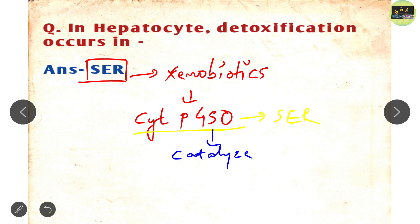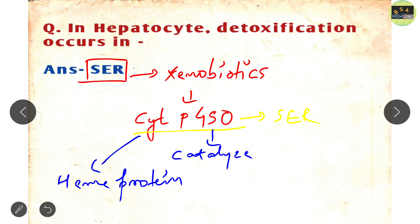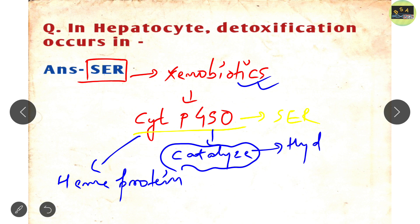Remember that cytochrome P450 is a heme protein. Other examples of heme proteins include catalase (an enzyme of the peroxisome that oxidizes H₂O₂), cytochrome C (which plays a role in the electron transport chain), myoglobin, and hemoglobin. Cytochrome P450 catalyzes the removal of xenobiotics through hydroxylation.